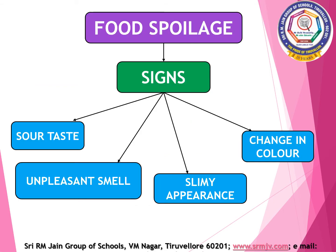You know that microorganisms are responsible for causing diseases in plants, animals and humans. Microorganisms like bacteria and fungi can grow on foodstuff when they are not stored properly. They grow and multiply rapidly on food under suitable conditions such as warm temperature, air and moisture.